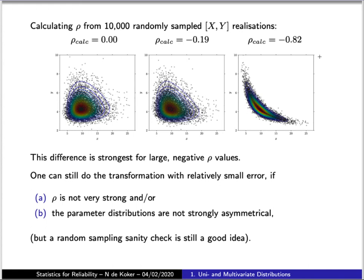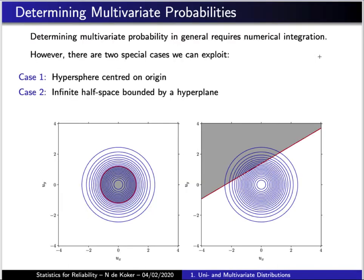Now what this illustrates is that the transformation methodology that I developed in the previous slides can be confidently used for variables that are not normally distributed, provided that they don't have strong correlation between them and that the parameter distributions are not very strongly asymmetrical, which for the types of problems that we're going to be looking at is a reasonable assumption to make.